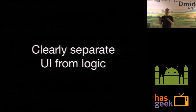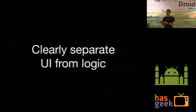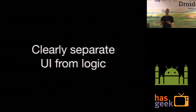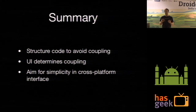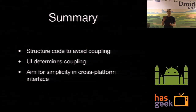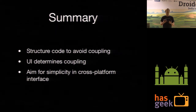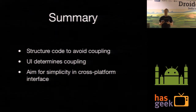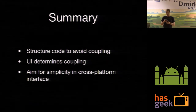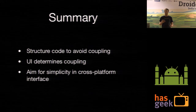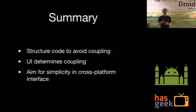The most important separation of concerns when separating your portable logic from your native UI is between UI and logic. Choose design patterns for your interface that make this separation really, really clear. Model-View-ViewModel works really well for us because it gives you a really obvious target point for what you're going to wrap. In summary: structure your code to avoid coupling. Where your UI needs to get stuff out of your logic layer determines where the coupling is going to happen. Reduce the amount of coupling you have and it's going to make it easier to write the UI. Aim for simplicity in the cross-platform interface.